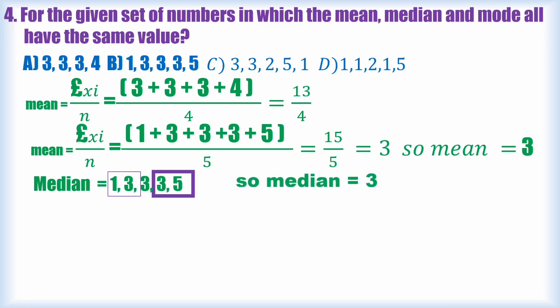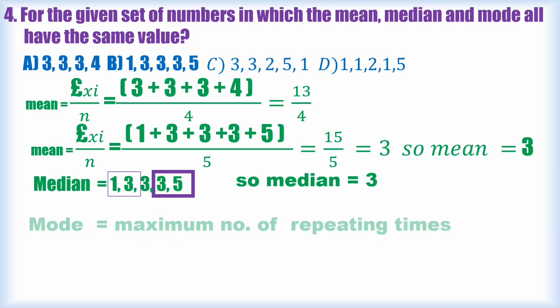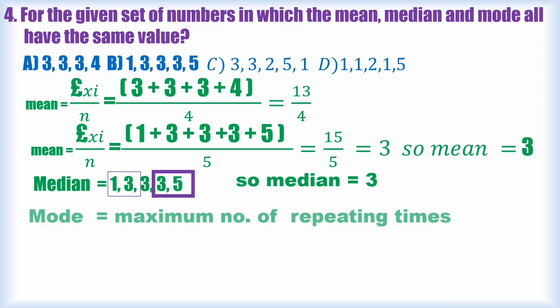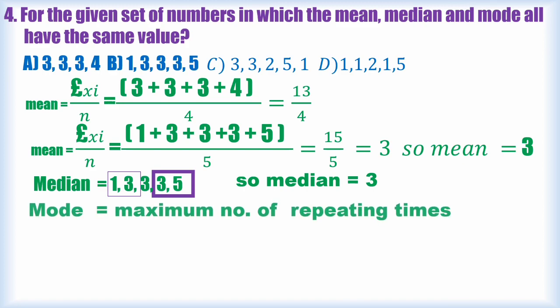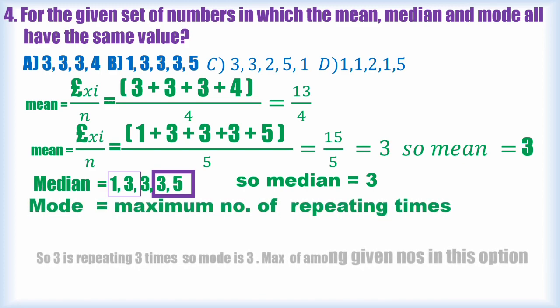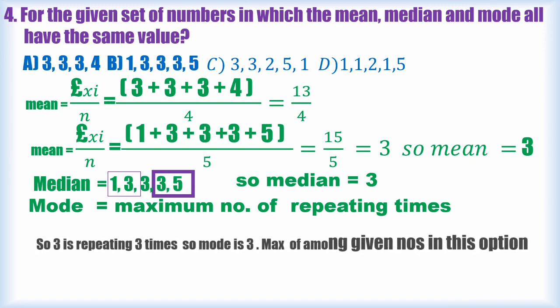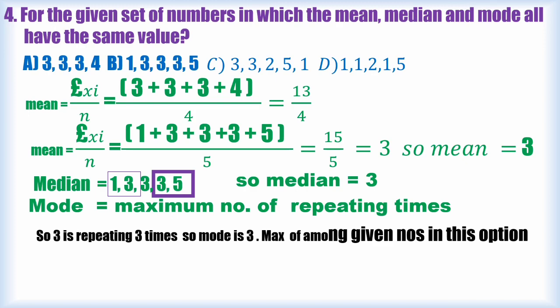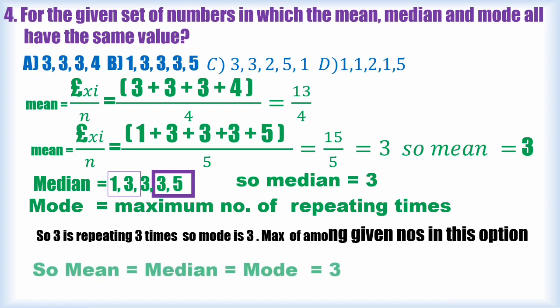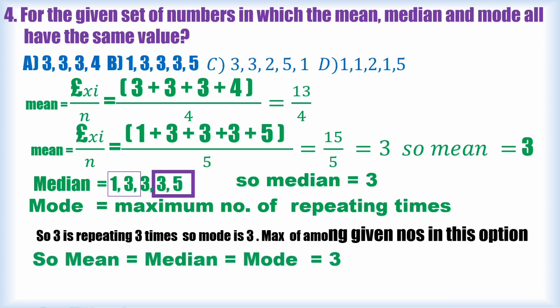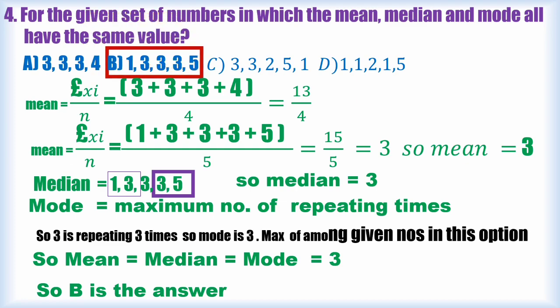For option B, arranging in ascending order the middle (third) value is 3, so median = 3. The number 3 is repeated three times — the maximum frequency — so mode = 3. Mean = median = mode = 3, so B is the correct answer. The other options do not satisfy this condition.